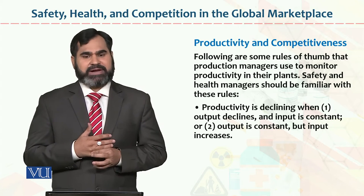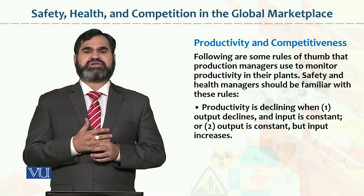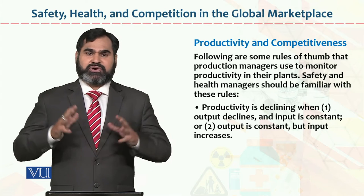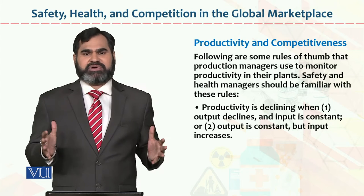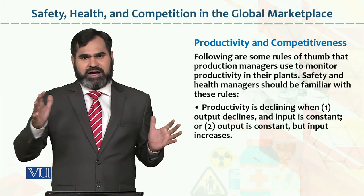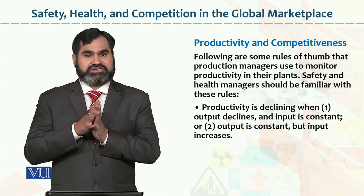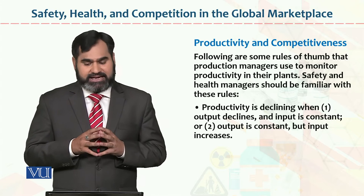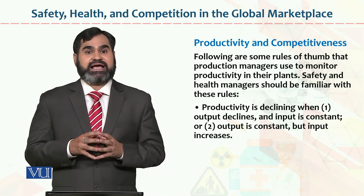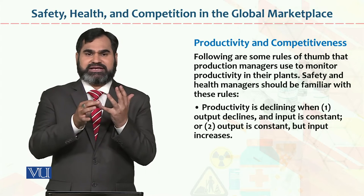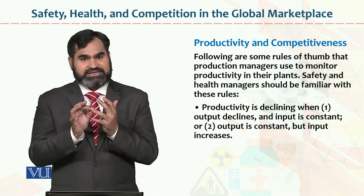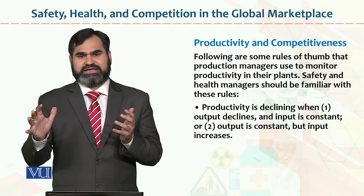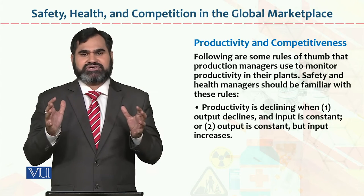Following are some rules of thumb that production managers use to monitor productivity in their plants. The production manager is the person responsible for production, from input to output — all processes are part of production. Safety and health managers should be familiar with these rules as well. The production manager must ensure input, output, and outcome, while the safety and health manager must ensure that health-related issues within all of these are addressed.